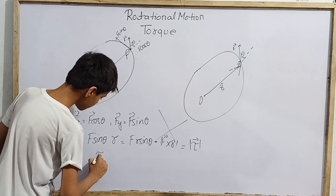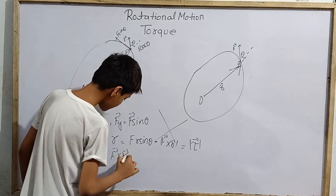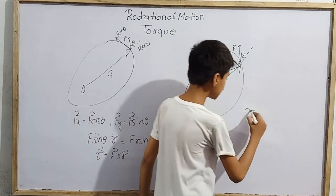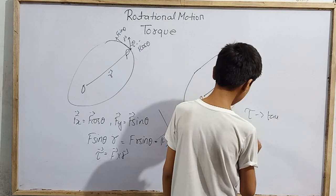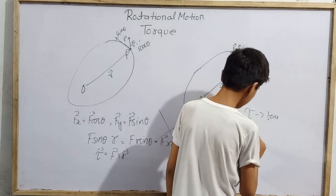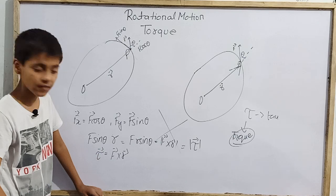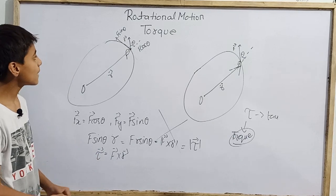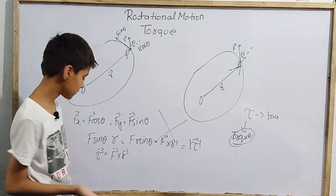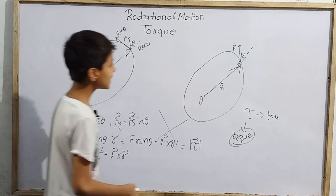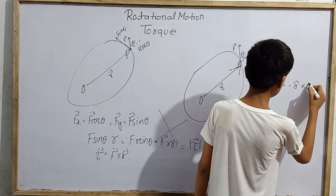So as a whole, tau vector equals F vector cross R vector. This symbol is named tau — it is called torque. This is defined as tau in physics. Now F vector cross R vector equals minus R vector cross F vector. So you should not make mistakes right here.